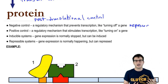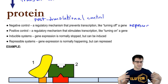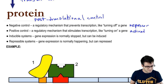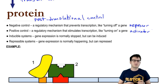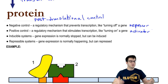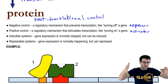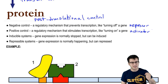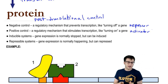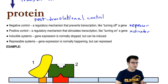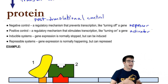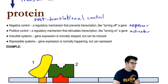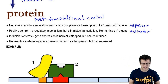In a positive control system, the regulatory mechanism stimulates transcription, usually in the form of an activator protein. In an inducible positive control system, we normally don't have gene expression, but we can induce it by adding in the activator. In a positive repressible system, gene expression is normally occurring because the activator is normally attached, but when we want to shut it off, we can do so by releasing that activator.